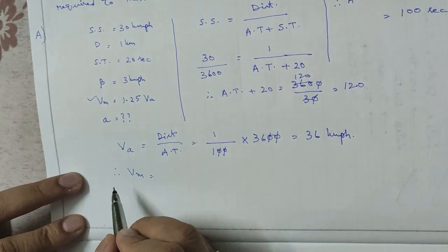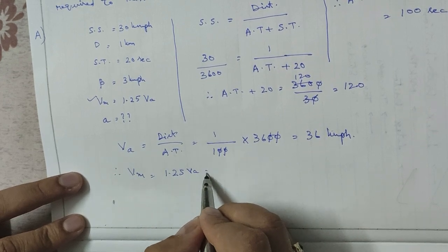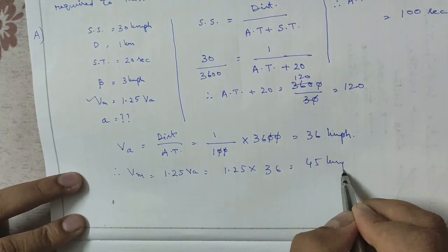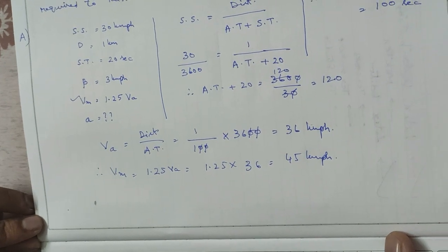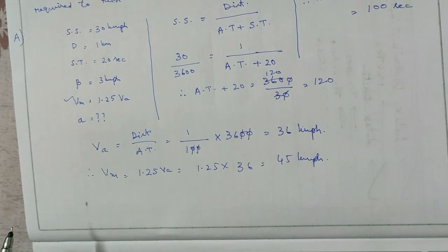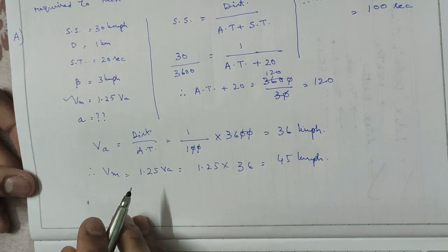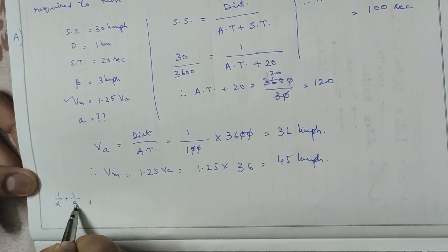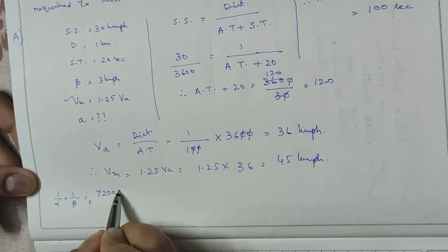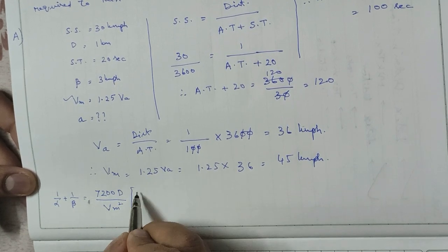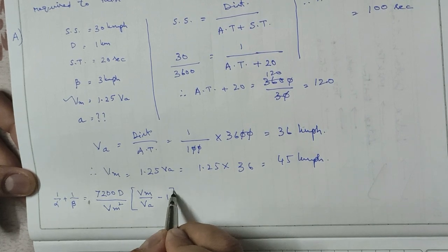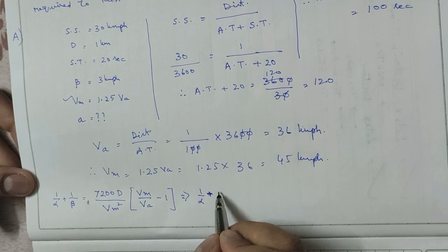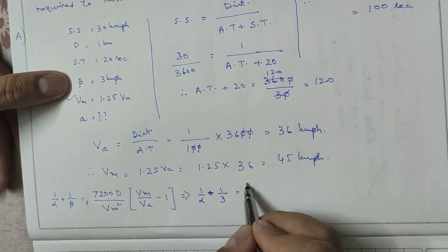Therefore, Vm = 1.25 × Va = 1.25 × 36 = 45 kmph. Now we use the speed-time curve formula: 1/α + 1/β = 7200D / Vm², where Vm = 45 kmph.